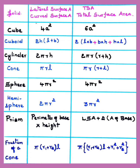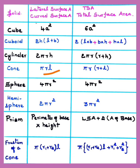The formula to calculate LSA — lateral surface area — is also called curved surface area (CSA). For a cube: CSA is 4a² and TSA is 6a². For a cuboid: CSA is 2h(l + b) and TSA is 2(lb + bh + hl). For a cylinder: CSA is 2πrh and TSA is 2πr(r + h). For a cone: CSA is πrl and TSA is πr(r + l).